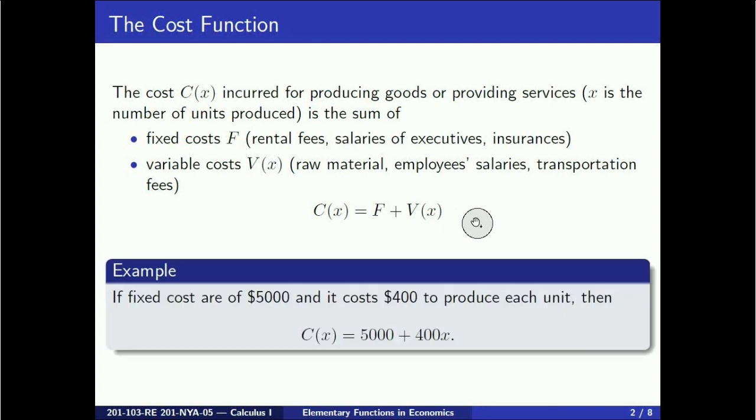For example, if fixed costs are $5,000 and it costs $400 to manufacture one unit, then we get the variable costs by multiplying 400 by the number x of units manufactured, so that V is 400 times x. The cost function C is then 5000 plus 400x.